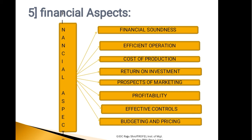Third area under the financial aspect is financing. The funds needed to finance the project are an important aspect of project appraisal. It is concerned with raising funds and making their most efficient use. The funds must be raised from places where the rate of interest is lower. Fourth area is income and expenditure. The income and expenditure profile is concerned with estimates regarding the income expected and expenditure involved in the project, helping in ascertaining the cost involved in production and the profit expected therefrom.